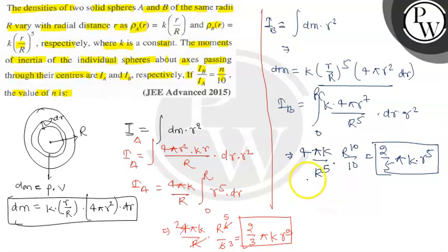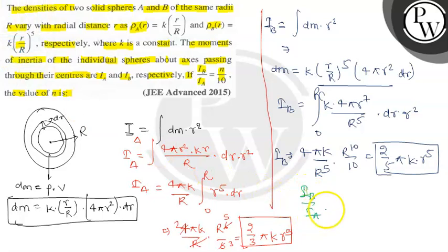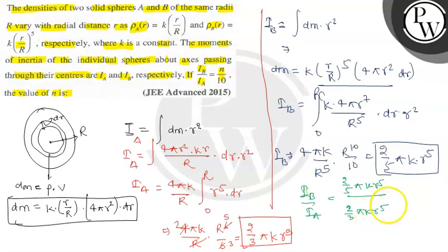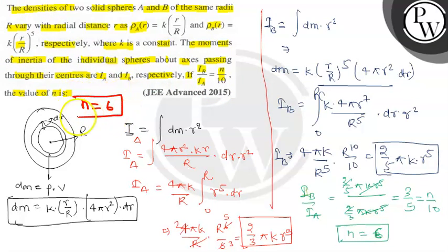Dividing Ib by Ia: we get [(2/5)πkR^5] / [(2/3)πkR^5]. Everything cancels, leaving 3/5. So Ib/Ia = 3/5 = n/10, which gives n = 6. The answer is n equals 6. I hope you guys understood it well — all the best!